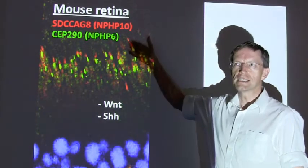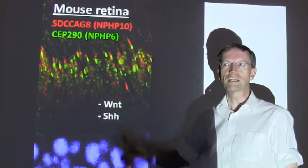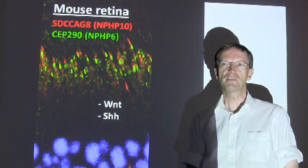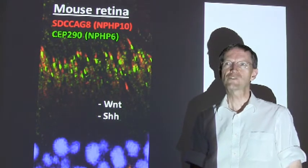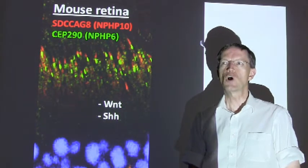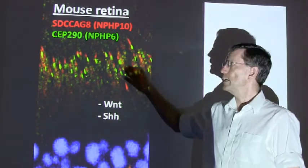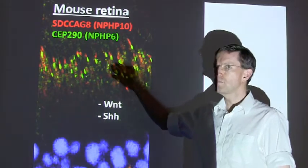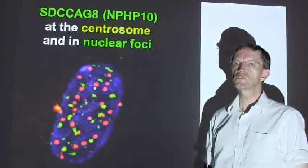When we found that a mutation in SDCC-AG8 causes a renal-retinal ciliopathy, we were surprised to see that the encoded protein is not only located at centrosomes, but also in nuclear foci.